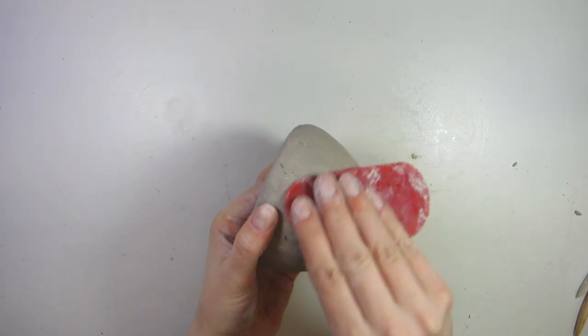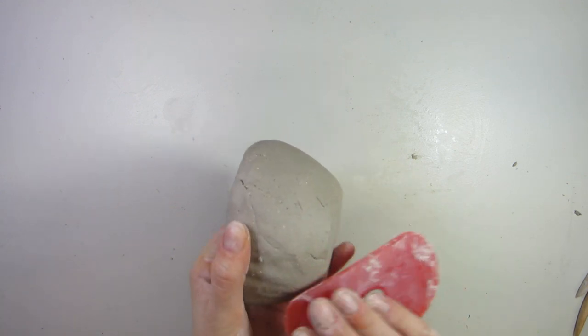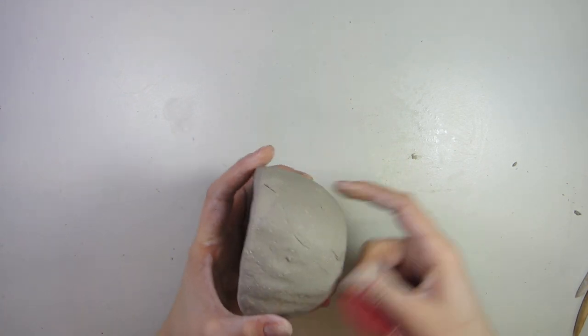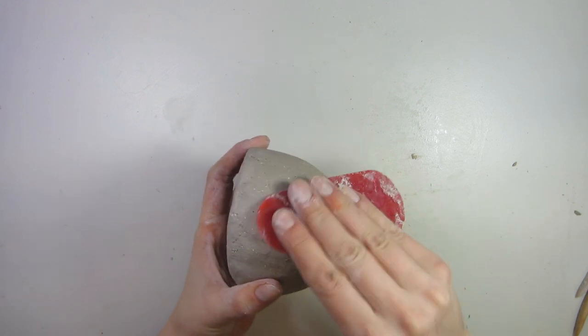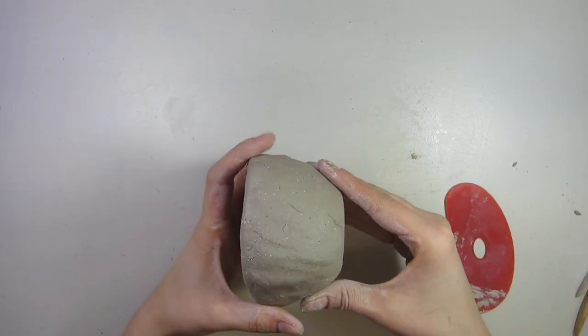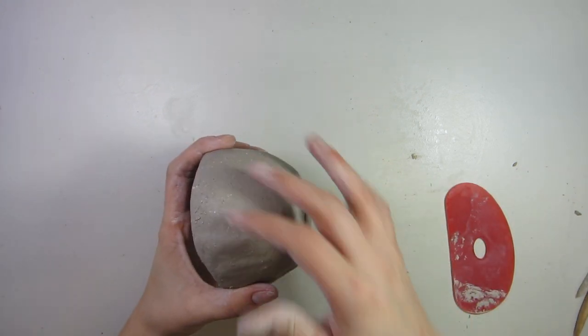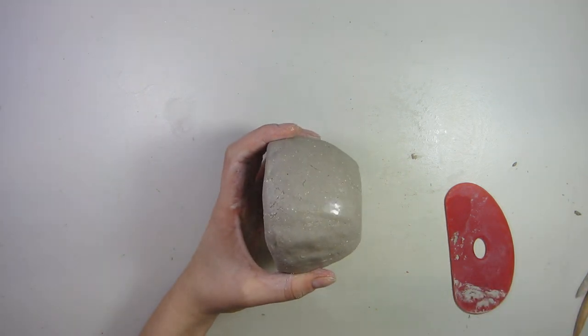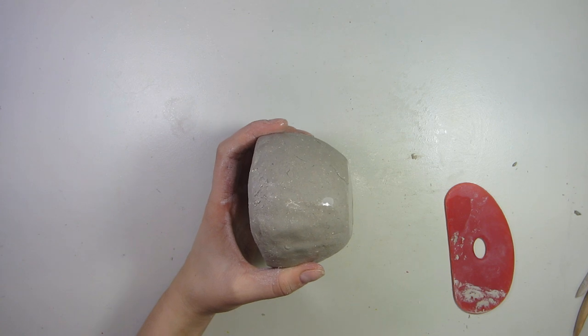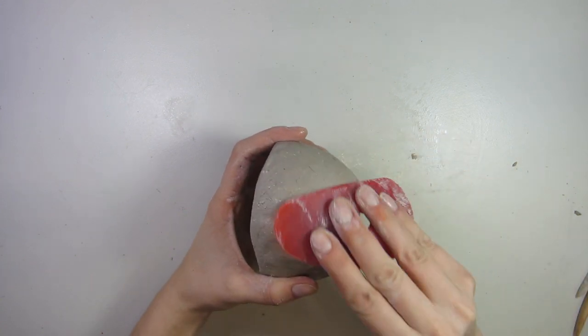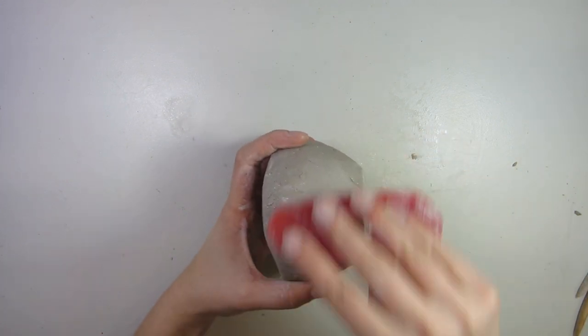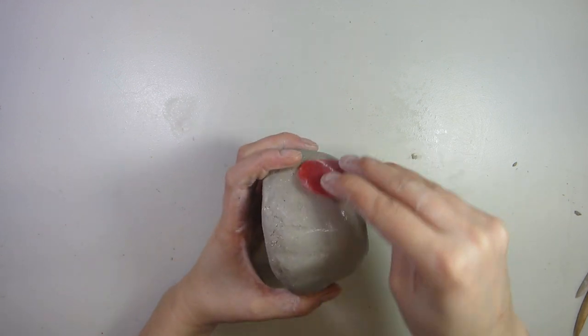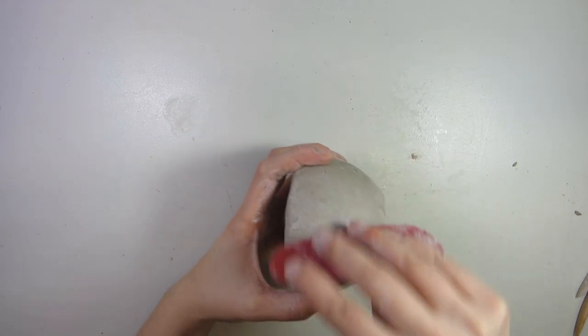...work out all the bumps with my rib. If you find it's like kind of, if it's not moving smoothly across the surface, take your spray bottle. That's it. Do not sponge people. And oh my gosh, it moves easily. How nice. We did not need a sponge.